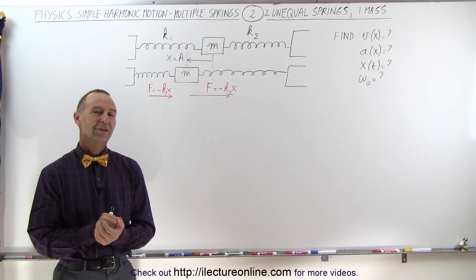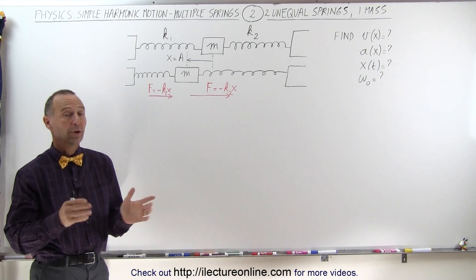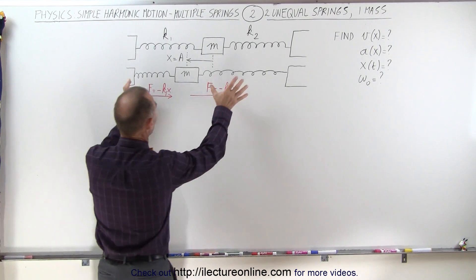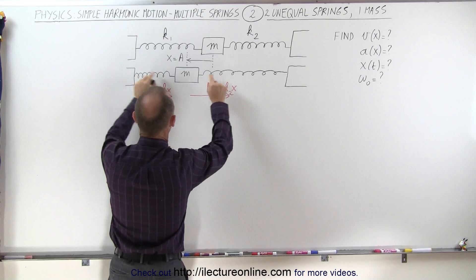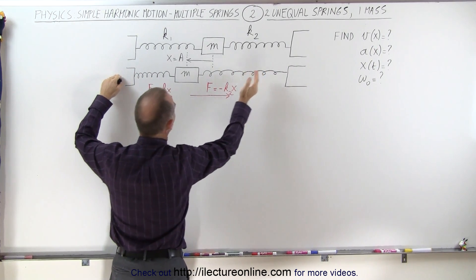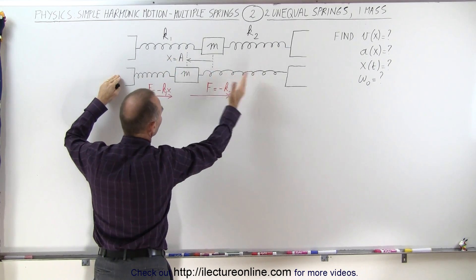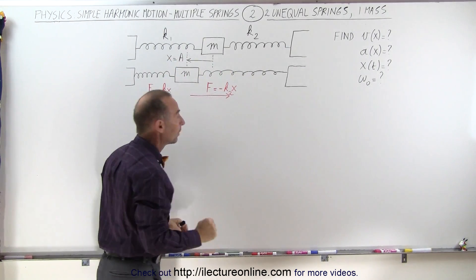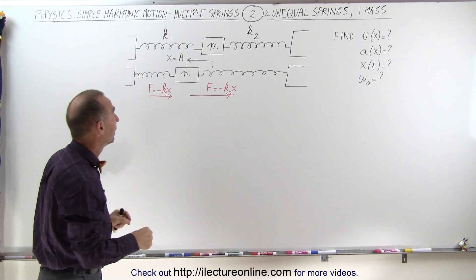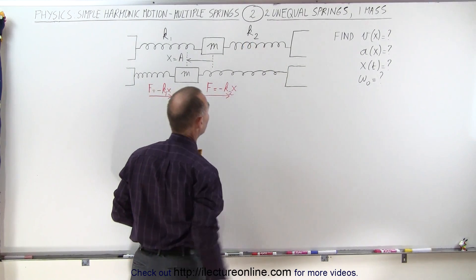Welcome to Electron Online. In our second problem in this set, we have the same setup as before. We have the single mass, two springs attached to the mass, and those springs are attached to solid anchors that do not move. And now again, we're going to push the mass to one direction, we'll let go, and it's going to oscillate back and forth. The difference here is that the springs are not equal. This one has spring constant k1, and this has spring constant k2.